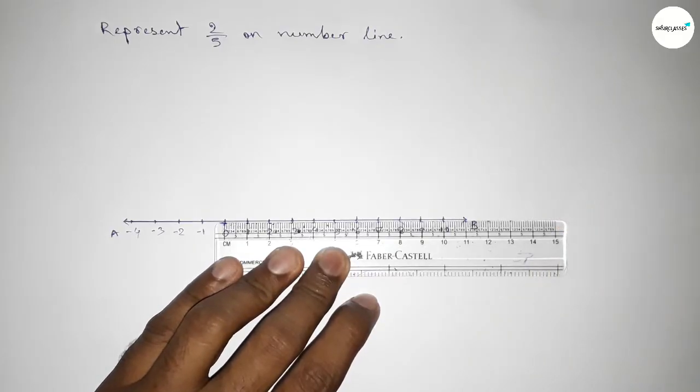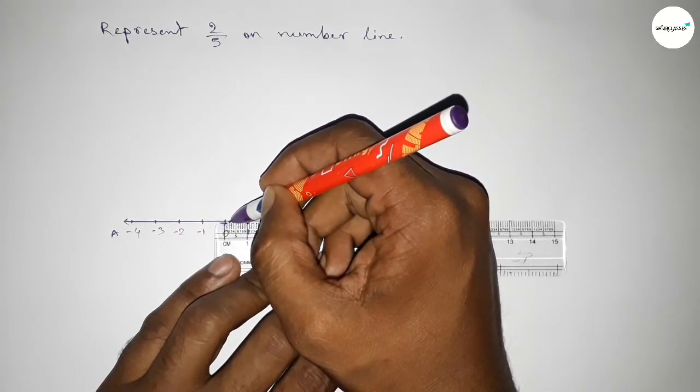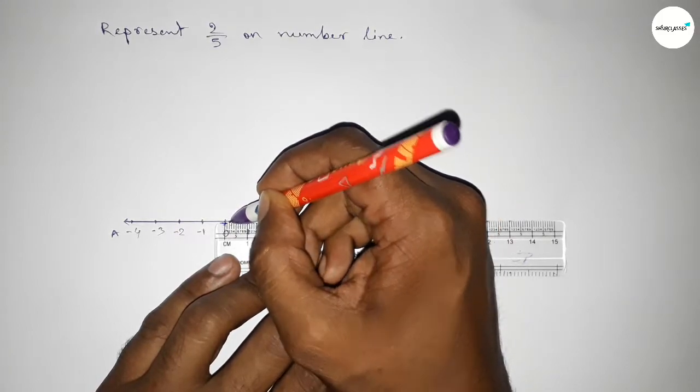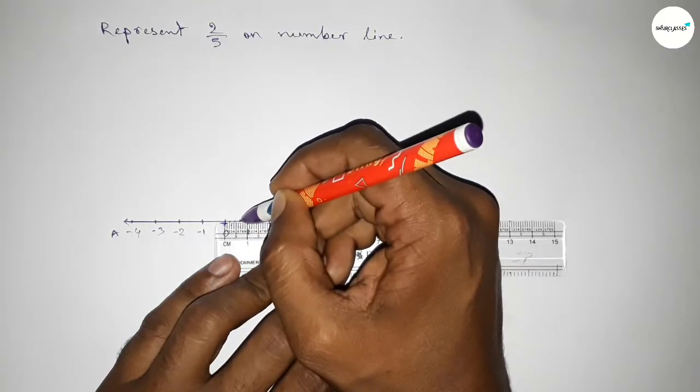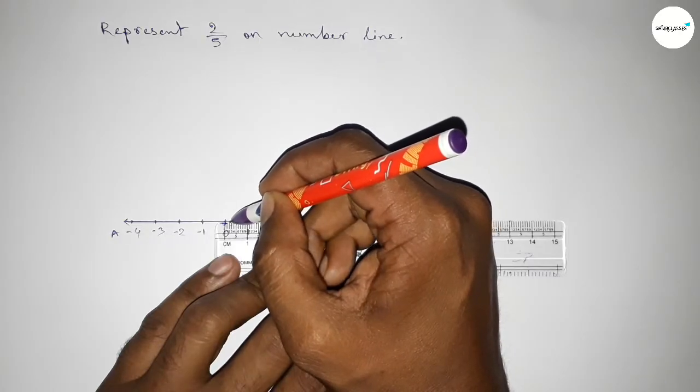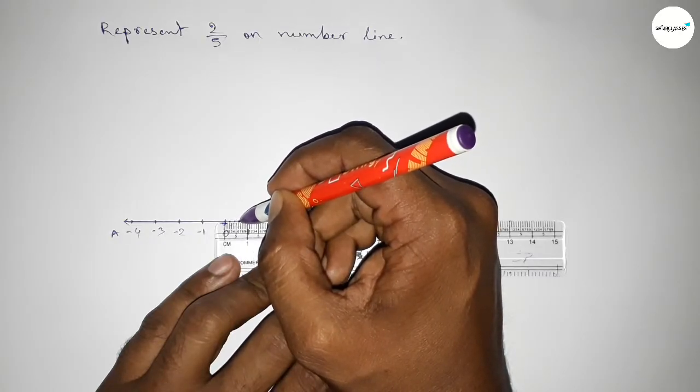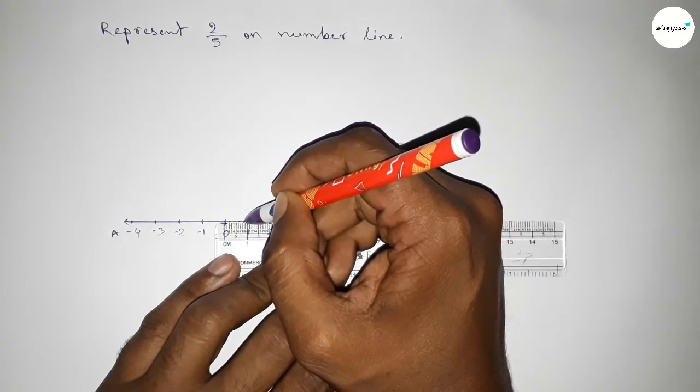The first part is 0.2, then the second part is 0.4, and the third part is 0.6 units. And the fourth part is 0.8, so this is 0.8 on the number line.